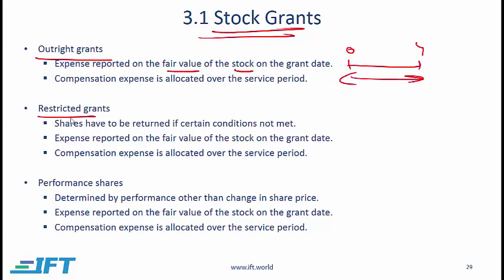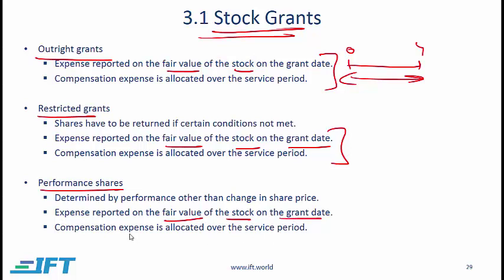Another category is restricted grants, where shares have to be returned if certain conditions are not met. The expense should be reported on the fair value of the stock on grant date and the compensation expense is allocated over the service period. Performance shares are determined by some performance measure other than share price; as before, the expense is reported on the fair value on grant date and allocated over the service period.